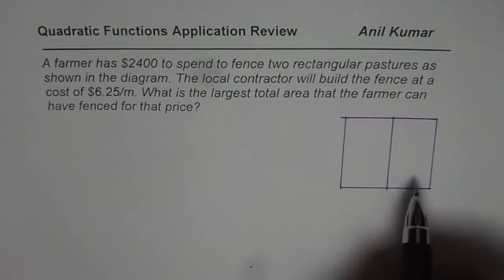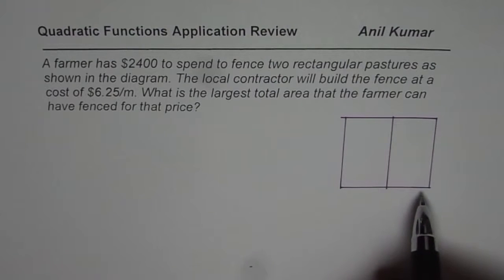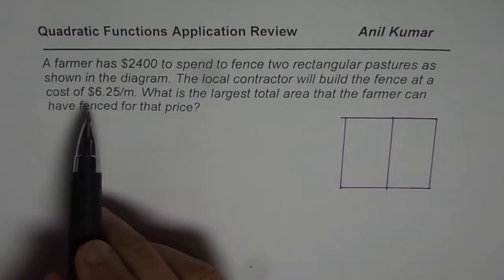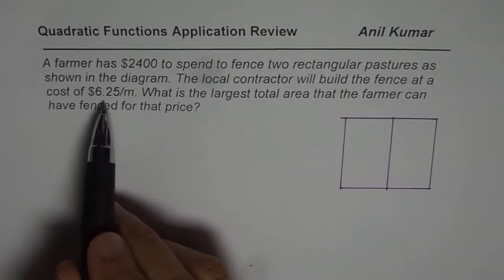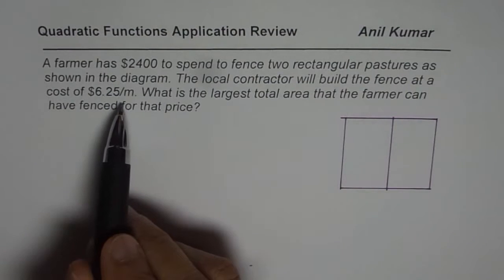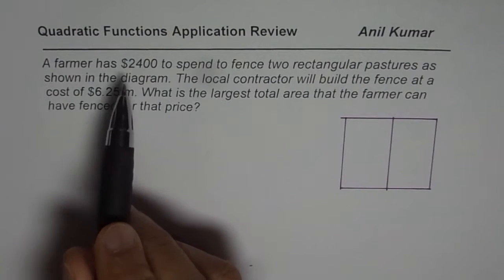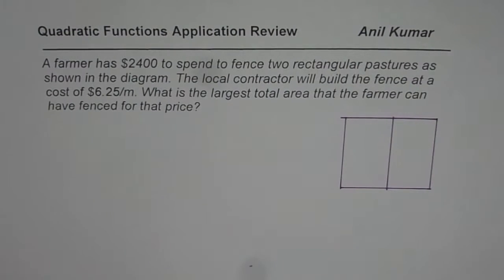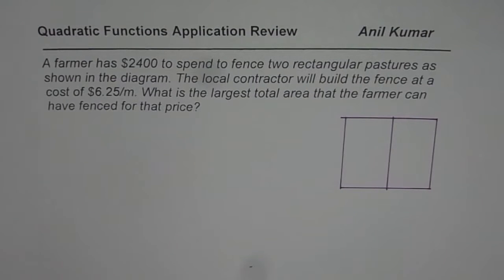So that is the kind of fencing the farmer needs. The rate is $6.25 per meter and the budget is $2400. You need to find the maximum area which can be enclosed. You can pause the video, solve the question, and then look into my suggestion.